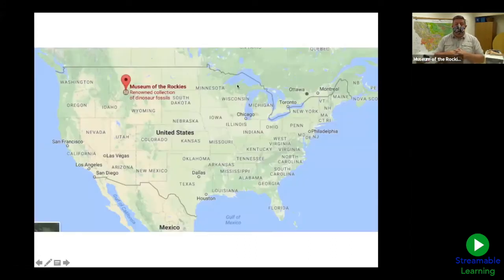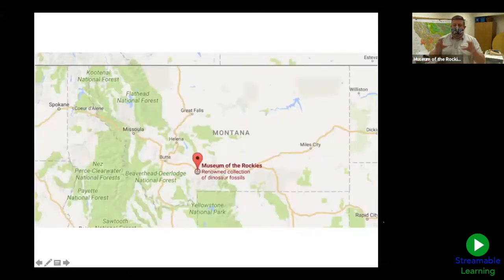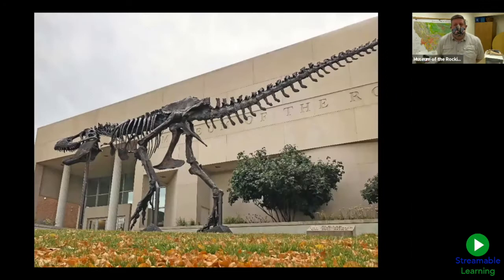For those of you who may not be familiar with where we're at, we're in southwestern Montana. Here's the map of the United States — you can see the red dot denoting where the Museum of the Rockies is. Zooming in on Montana, we're just about an hour to an hour and a half north of Yellowstone National Park. Montana is a really cool place to find fossils, with lots of fossils and really good geology.